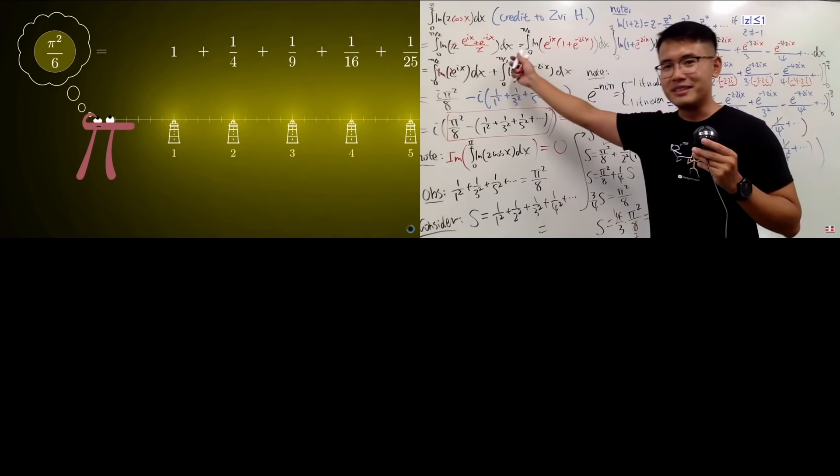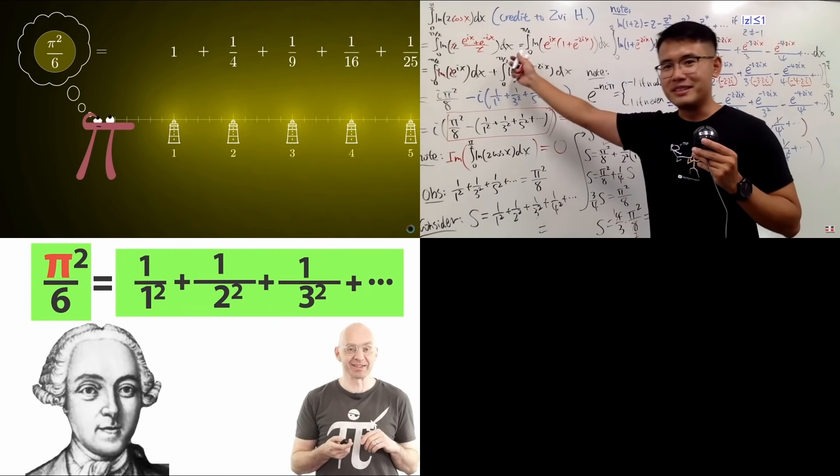There's just one problem, though. We've seen this before, haven't we? 3Blue1Brown provided a spectacular visual proof using light. Our friend Steve from Black Pen Red Pen proved it using an integral in the complex domain. Mathologer gave us a sketch of Euler's classic 1734 proof.